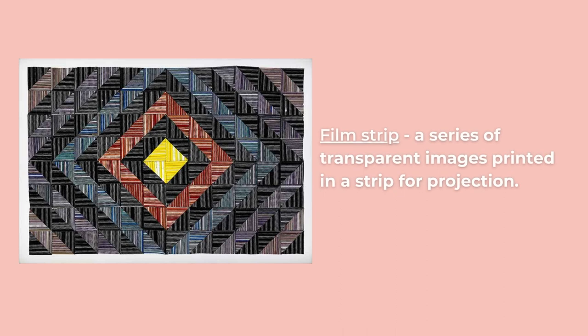A film strip is a series of transparent images printed in a strip for projection. That's how they used to make movies before digital cameras. The images would be recorded on film strips, then the strips would be copied and sent to different theaters along with separately recorded sound so they could show the movie.